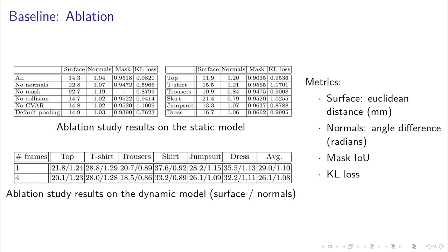Upper table shows the performance on the static model. It shows the effect of each loss term and an analysis of the error per garment type. We see that skirts and dresses are the most challenging garments. This is the expected behavior as they break the assumption that clothes follow the body.